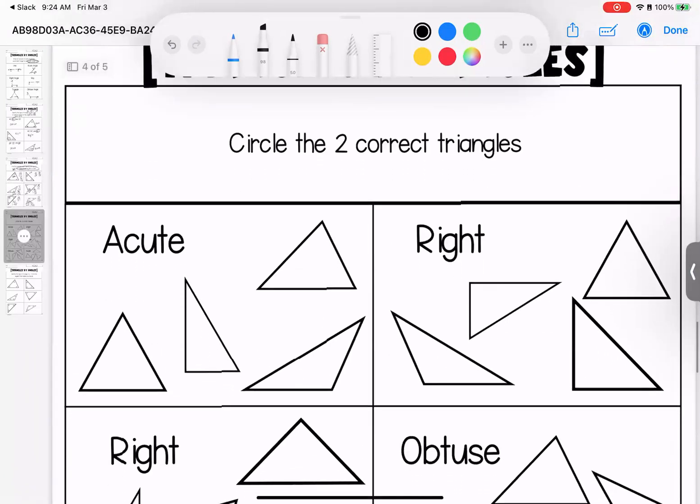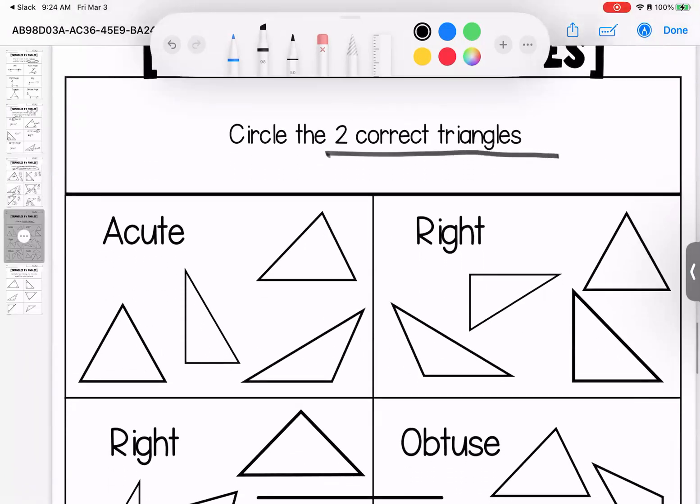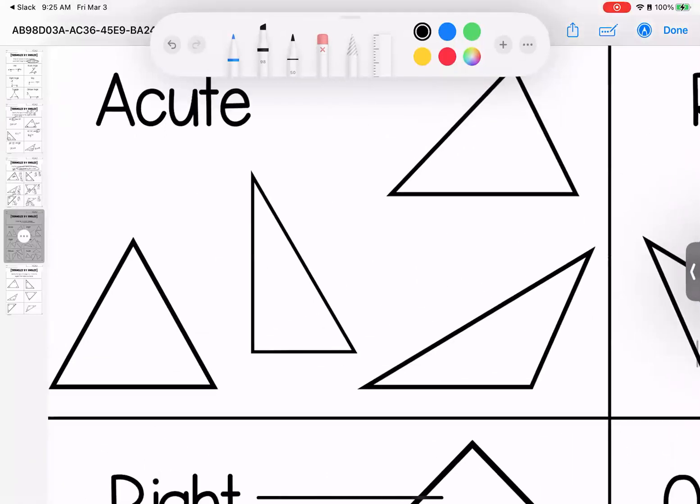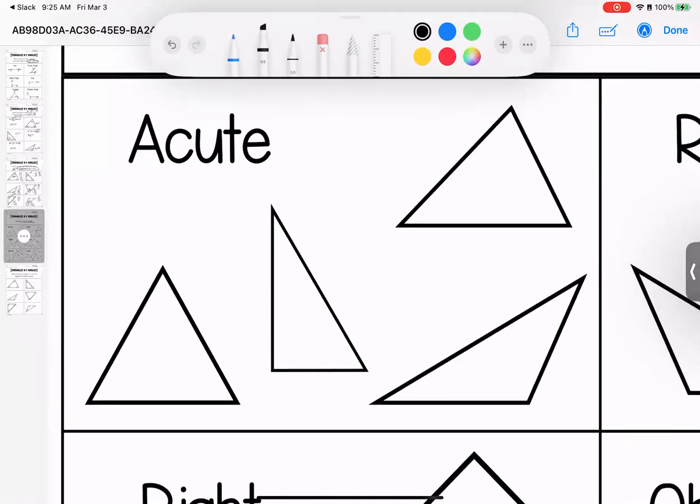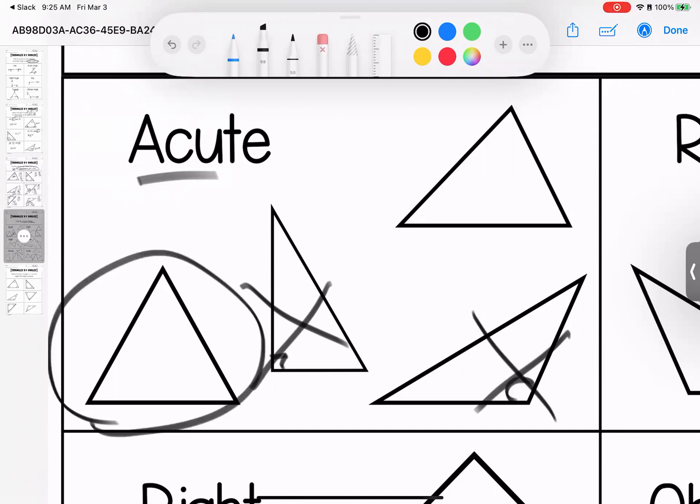All right, kiddos. The next page is circling the two correct triangles. So each of these pictures have four triangles. Two of them meet the rules. So I'm looking for two acute triangles. This right here is a right angle. This right here is an obtuse angle. So my correct triangles would be these two.